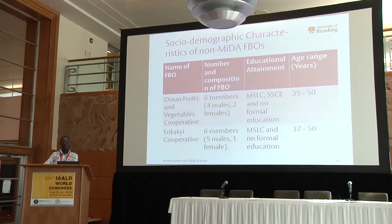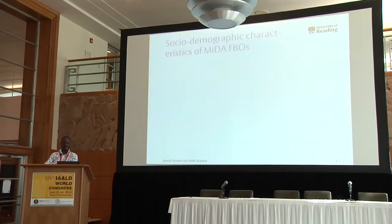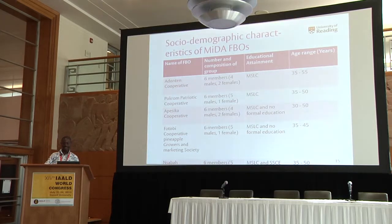Here is a brief overview of the social demographic characteristics. MIDA FBO members had an age range of 35 to 50 years and generally an educational level of middle school leaving certificates to no formal education. The non-MIDA FBOs, however, had educational status ranging from middle school leaving certificates to senior secondary school leaving certificates and no formal education, with an age range of 35 to 55 years.